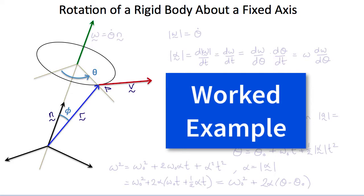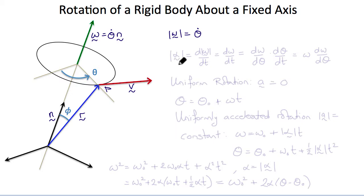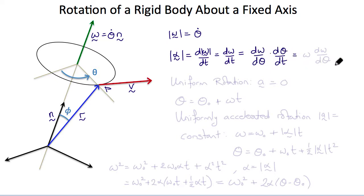Let's look at some special cases of rotation about a fixed axis. Again, omega is θ-dot n, so the magnitude of omega is θ-dot. The magnitude of the angular acceleration is d/dt of the magnitude of omega, which is dω/dt, or applying the chain rule, dω/dθ times dθ/dt, which is ω dω/dθ. So when you need to integrate an angular acceleration as a function of θ, you can use this form.